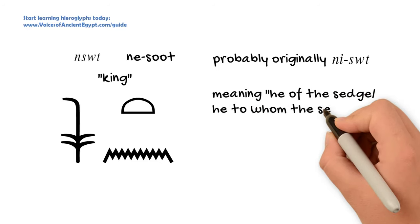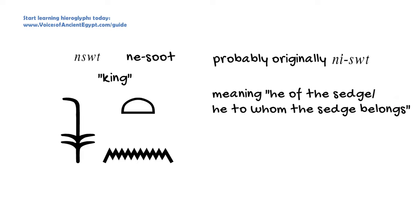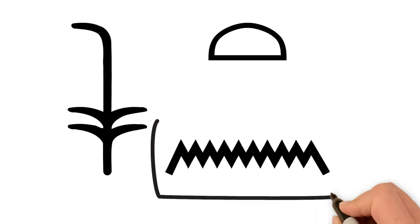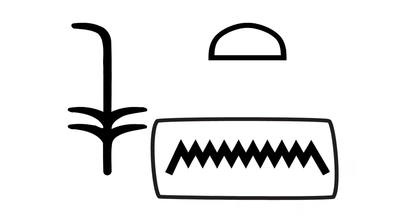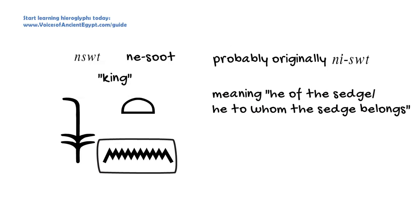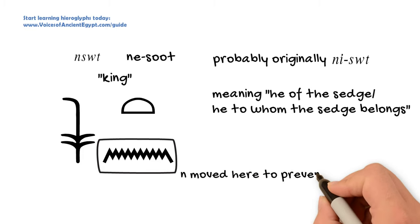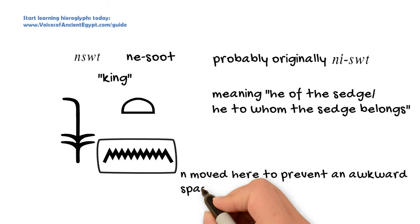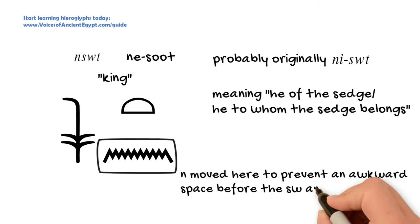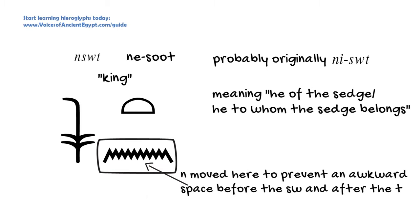This word is sometimes fully spelled out, although you'll notice the N is in what you might expect to be the wrong place — and that is simply because it fits better there. The ancient Egyptians, as I've talked about in other videos, often move things around so that the group of hieroglyphs can form a nice square or rectangular unit without any weird gaps. That's what they've done here by putting the N after instead of before the 'sue' plant.